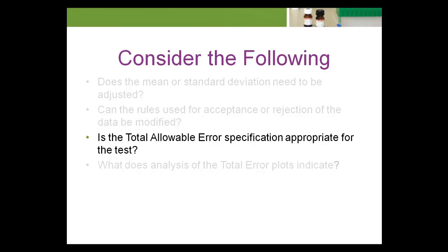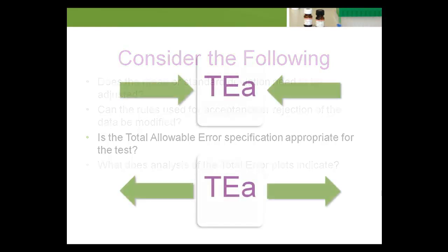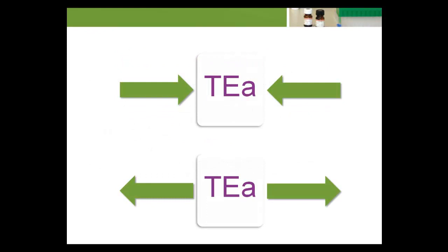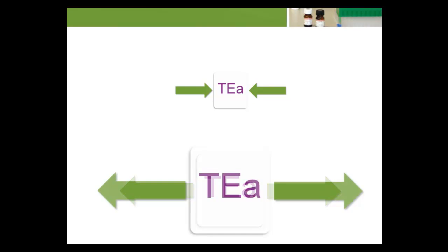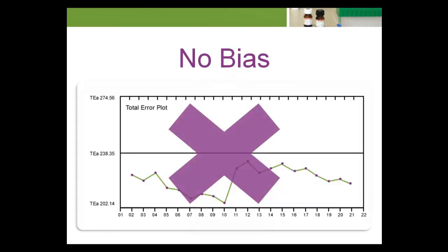Let's move on to the next question: Is the total allowable error specification appropriate for the test? To answer this, we need to consider whether the quality goal should be narrowed or widened. If test performance is much better than the set quality specification, narrowing of the quality goal may be considered.